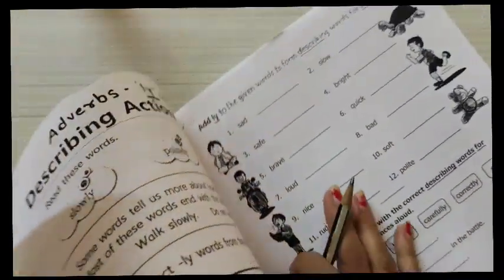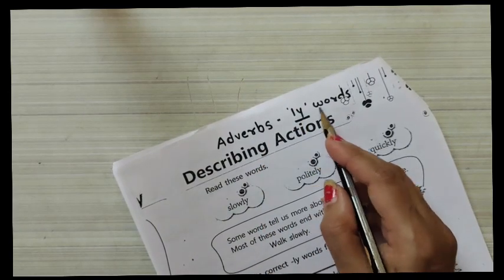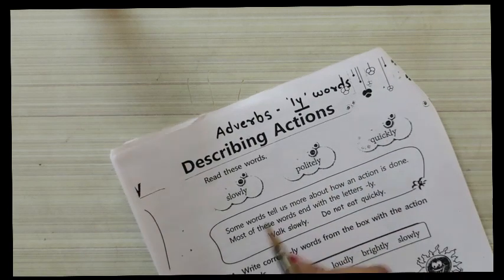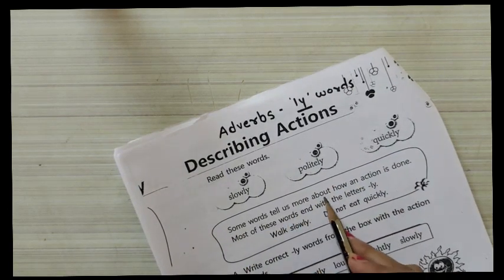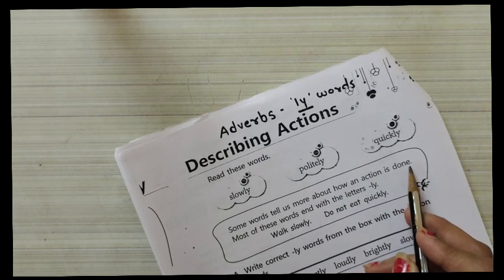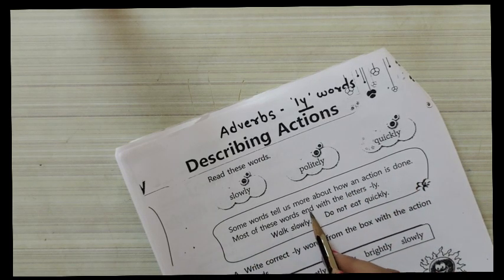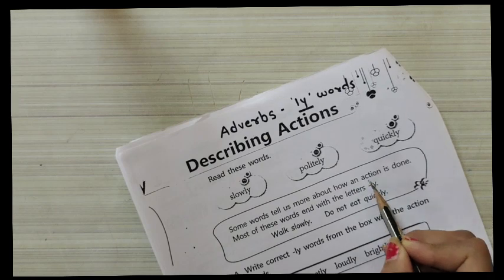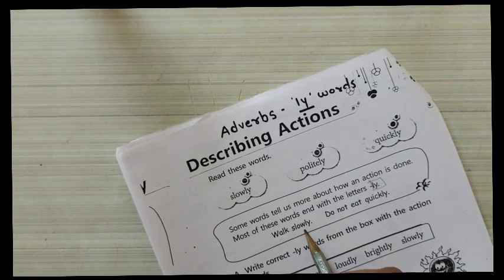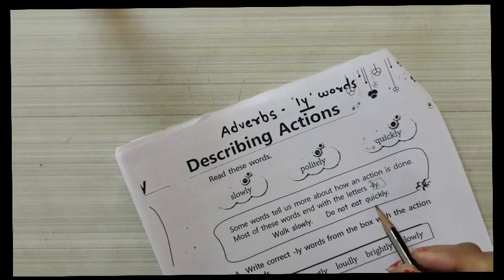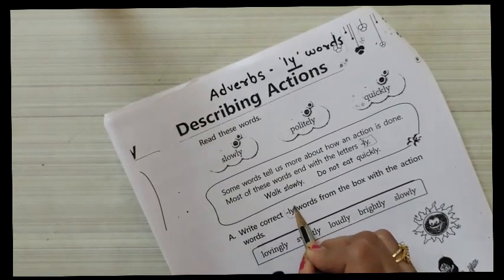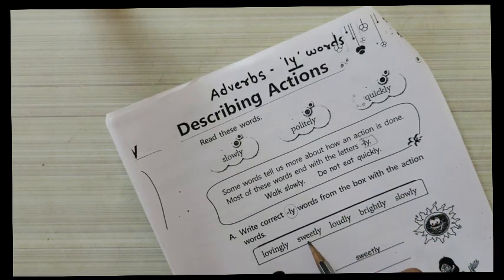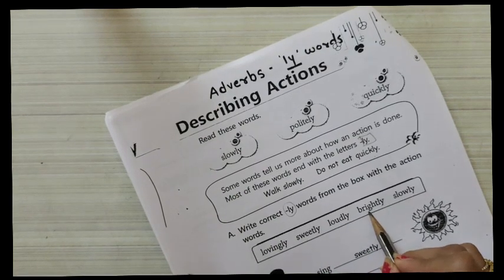Turn your page. Adverbs — LY words, describing actions. Slowly, politely, quickly. Some words tell us more about how an action is done. Most of these words end with the letters -ly, just as I told you. Walk slowly. Do not eat quickly. Write the correct -ly words from the box with the action words: lovingly, sweetly, loudly, brightly, and slowly.